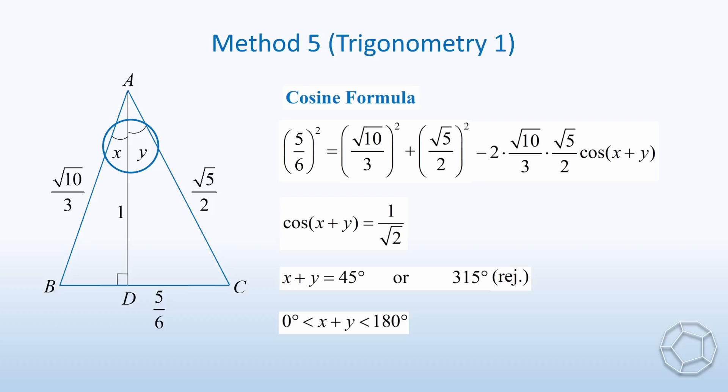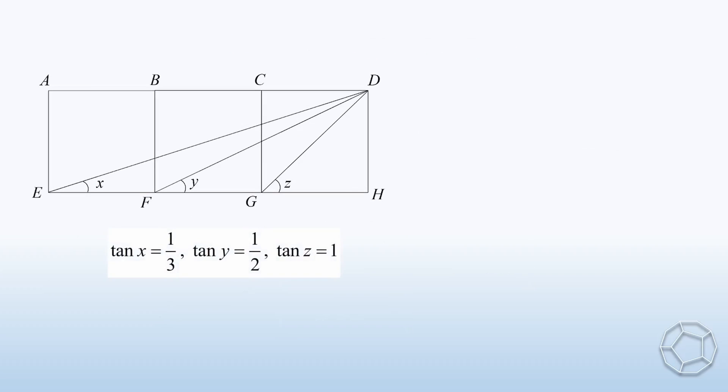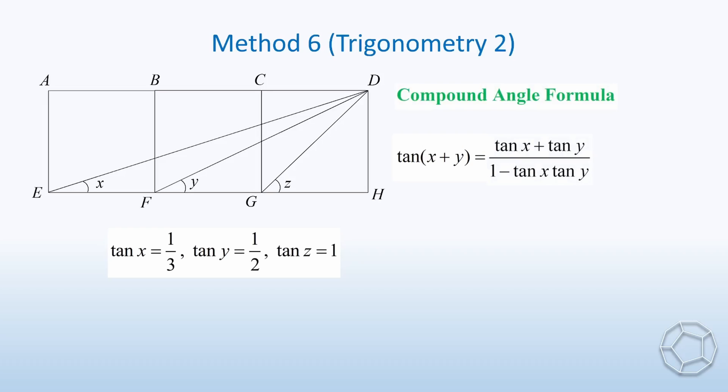We have made use of different kinds of construction. Is there any method that we don't have to construct anything? The sixth method is probably the shortest way to work out. And I call this the brute force method. Now, let's work out tangent bracket x plus y directly. We make use of the compound angle formula tangent x plus tangent y over 1 minus tangent x tangent y. Putting the values inside, we get tangent bracket x plus y is equal to 1. By the same argument as method 5, we can conclude that x plus y is equal to 45 degrees. So there is a shift from somewhat geometry to algebra.